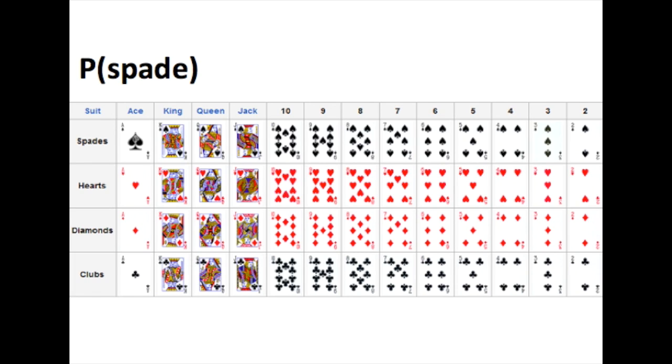We are interested in the probability of selecting a spade. Of the 52 cards in the deck, there are 13 spades. Or, we could also look at this and think that there are 4 suits that are evenly dispersed. So, 1 in 4 cards is a spade. Either way, this reduces to 0.25.